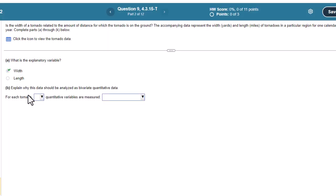Explain why this data should be analyzed as bivariate quantitative data. So for each tornado, how many variables are measured? Two, bivariate. We have width and length.